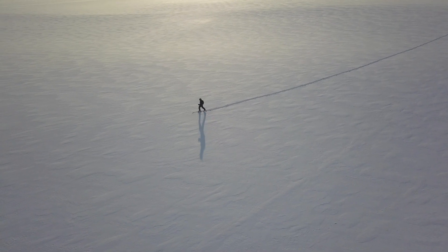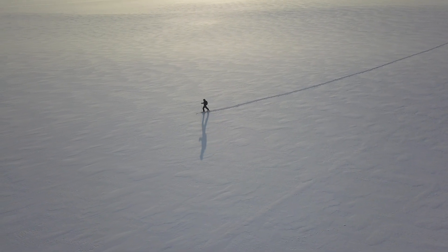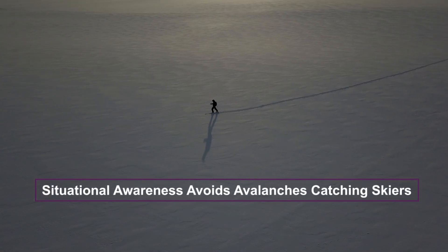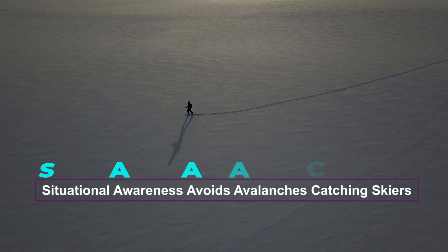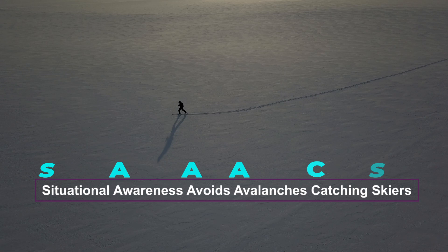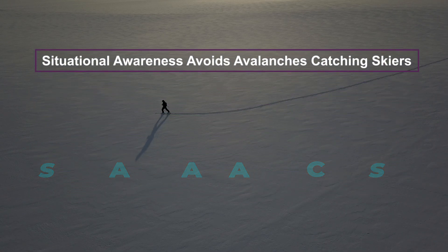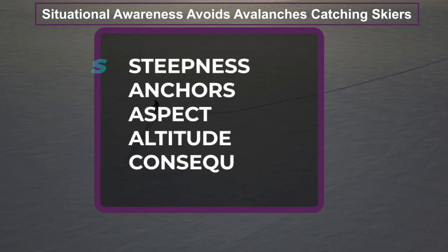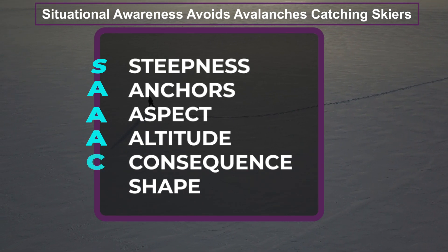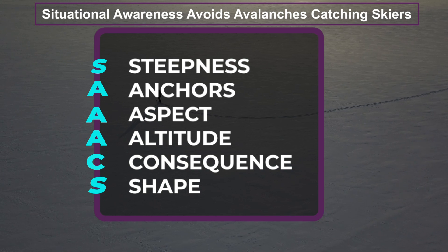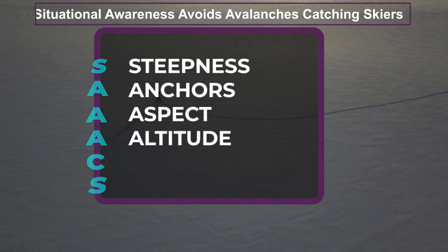Here's a memory aid to help you remember six important features of the terrain: Situational Awareness Avoids Avalanches Catching Skiers. The S stands for steepness, the three A's are anchors, aspect and altitude, the C stands for consequence and the S stands for shape. These six terrain features dictate the level of avalanche danger.